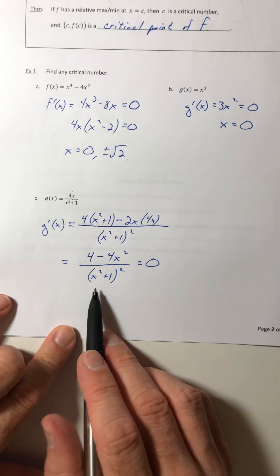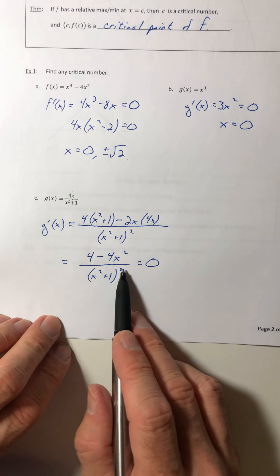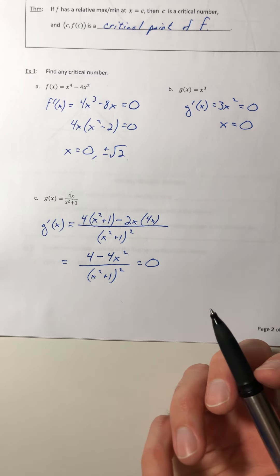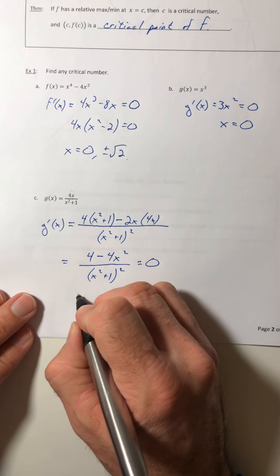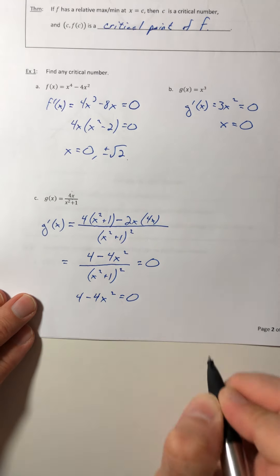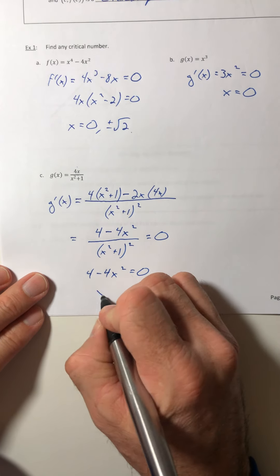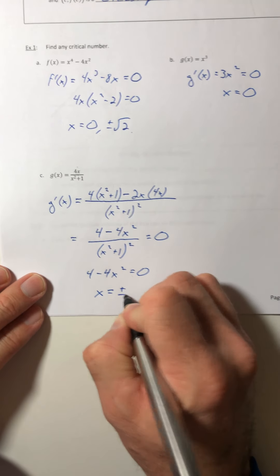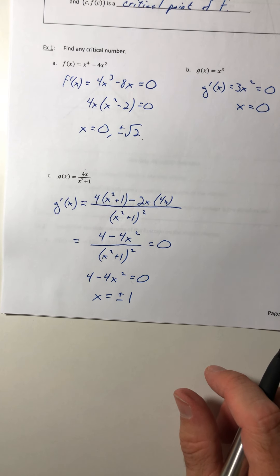Well, for the denominator, x² plus one, that's never ever going to equal zero. So the denominator is not going to yield a solution. It's just going to be the top. So you're really just solving the top equal to zero, and that's it. So x would be plus or minus one.